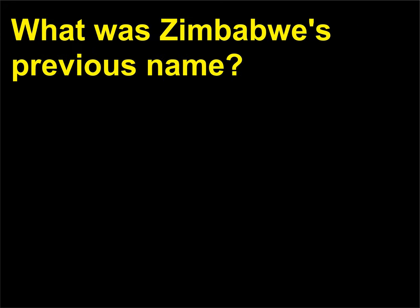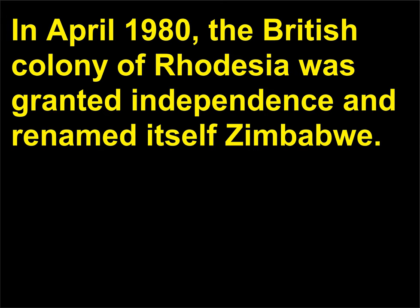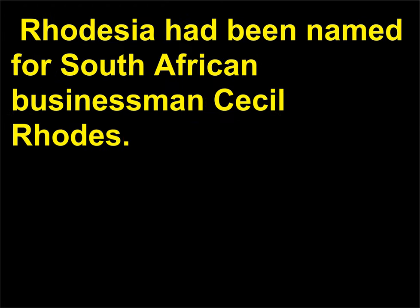What was Zimbabwe's previous name? In April 1980, the British colony of Rhodesia was granted independence and renamed itself Zimbabwe. Rhodesia had been named for South African businessman Cecil Rhodes.